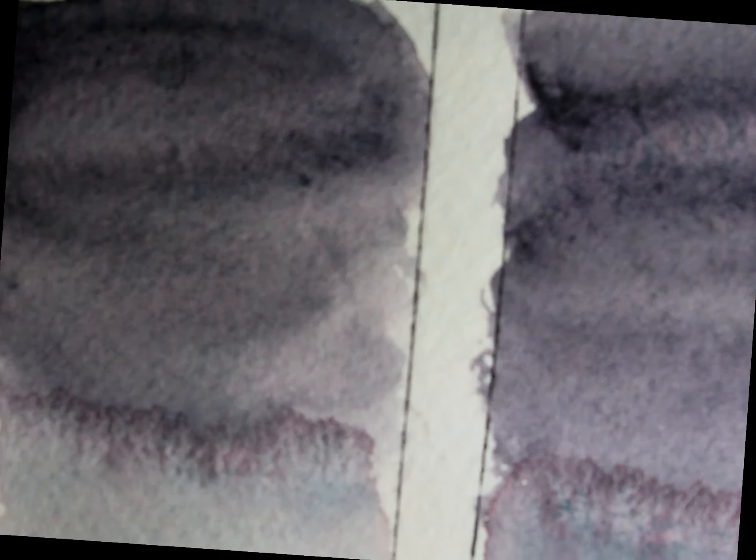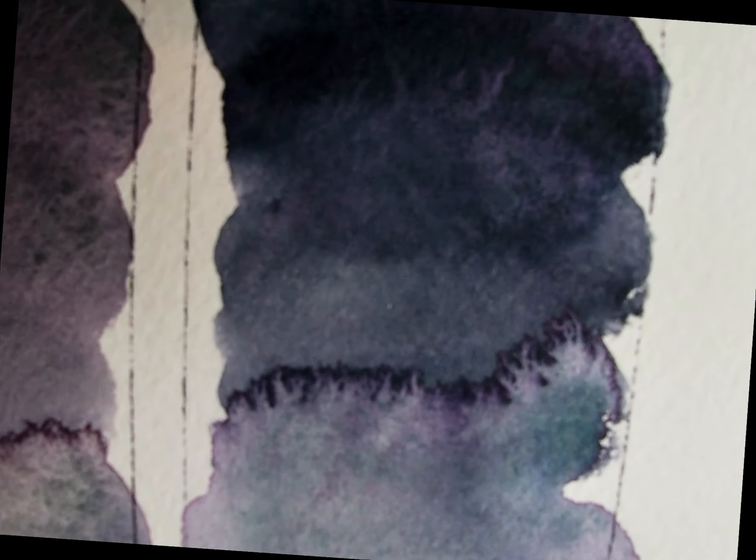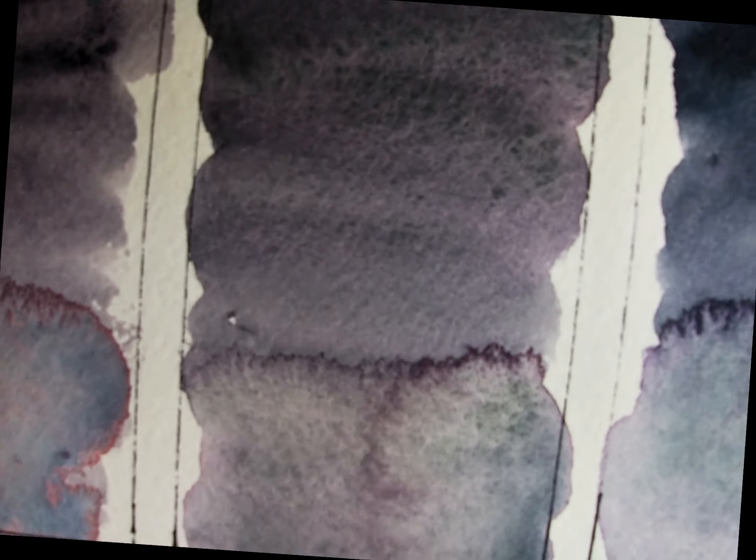So now that these are dry you can go ahead and take a look. This first one's Artemis. I went ahead and drew a mass tone line at the bottom of these. I don't know why I didn't do that before. And we have Moonglow, and then the Roman Schmalz Pritsby's Gray, and then their shadow violet.